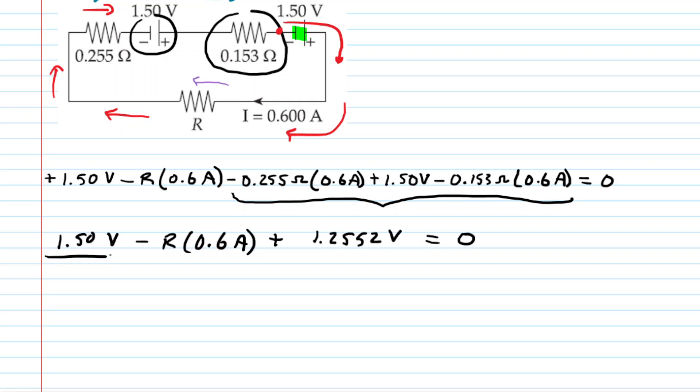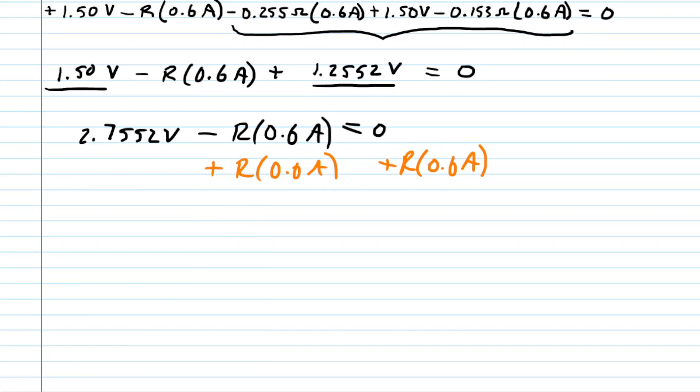Next, we can combine like terms. Let's add these two volts together. We have 2.7552 volts. Very good. We're solving for the resistance very nicely here. We're going to go ahead and to both sides, we will add this value, R times 0.6 amps. Make sure we do this on both sides. This cancels it out on the left-hand side, of course.